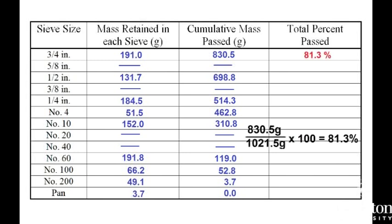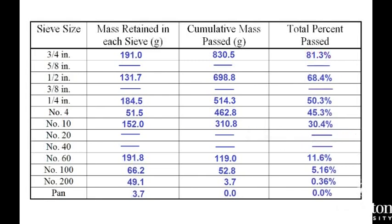Convert cumulative mass passed to a percentage of the total mass of the sample. To do this, simply divide the amount by the total mass of the sample and multiply by 100 for a percentage. Do this for each sieve size.